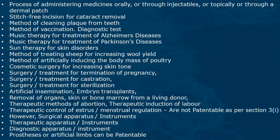Method of treating sheep for increasing wool yield, method of artificially inducing body mass of poultry, cosmetic surgery for increasing skin tone, treatment for termination of pregnancy, surgery, treatment for castration, treatment for sterilization, artificial insemination, embryo transplants, removal of organs, skin or bone marrow from a living donor, therapeutic methods of abortion, therapeutic induction of labor, therapeutic control of estrus, and menstrual regulation are not patentable as per section 3i.